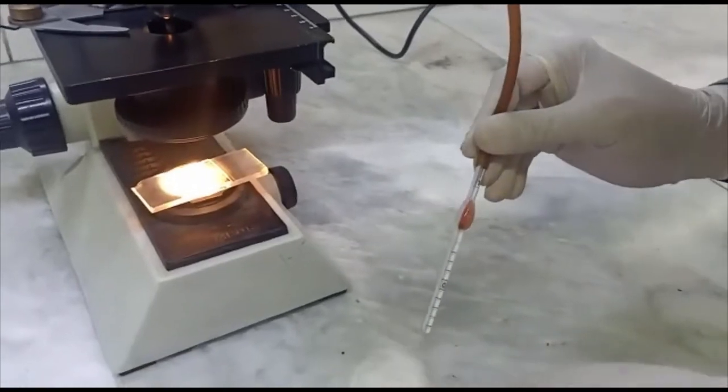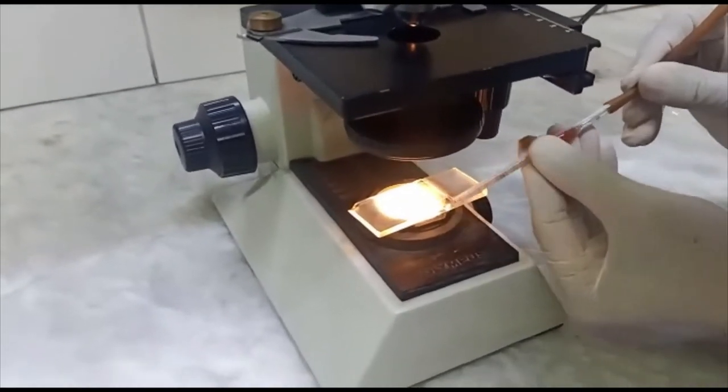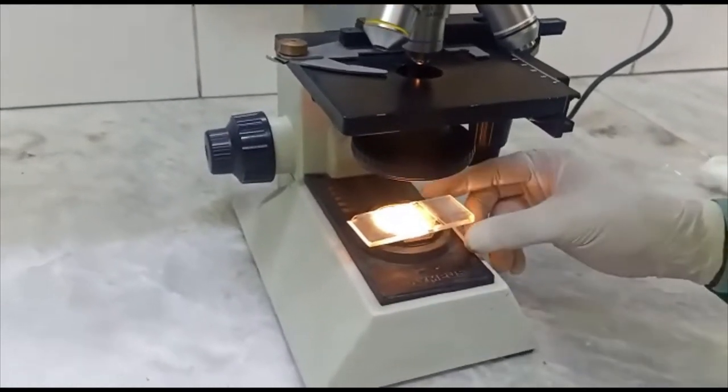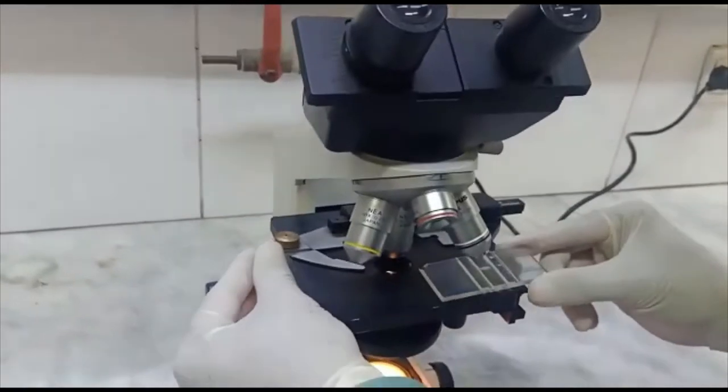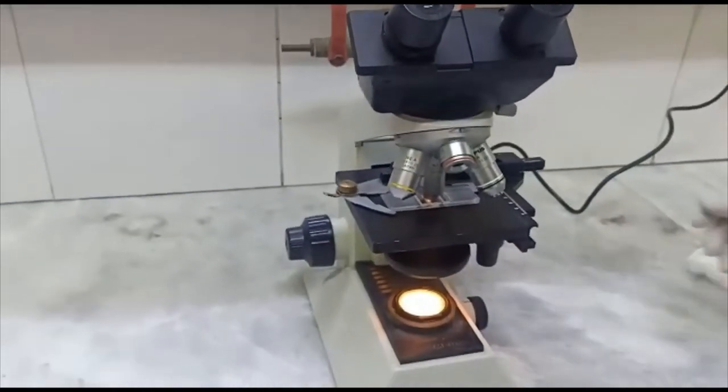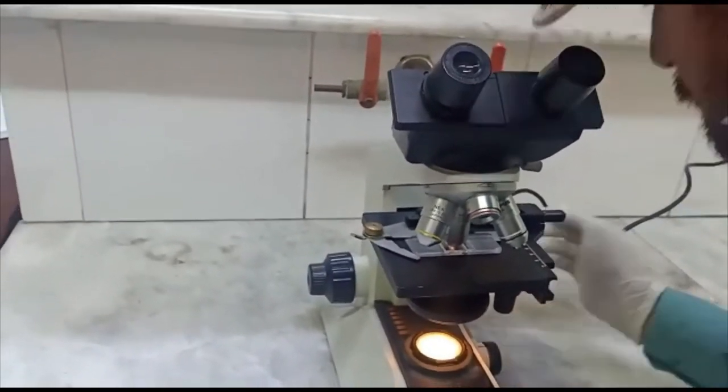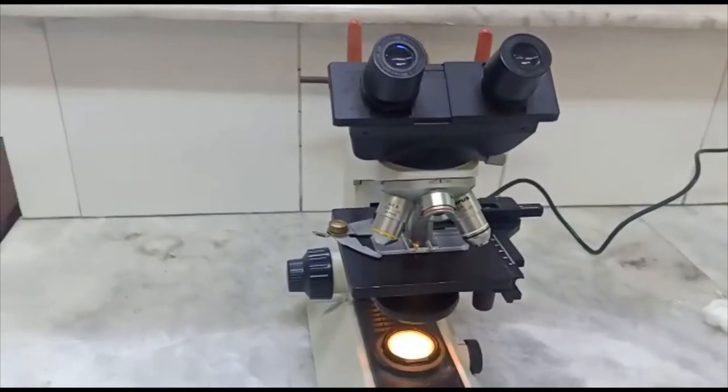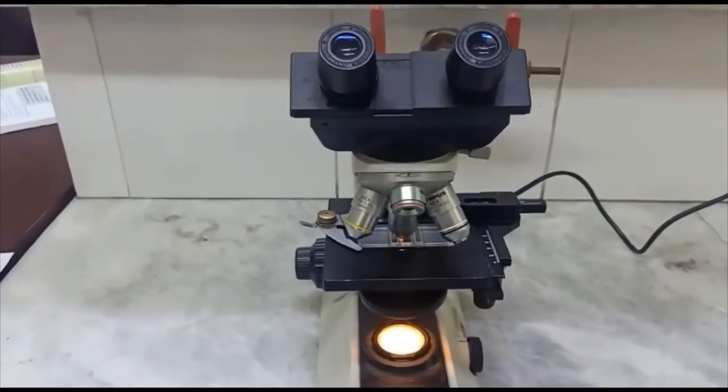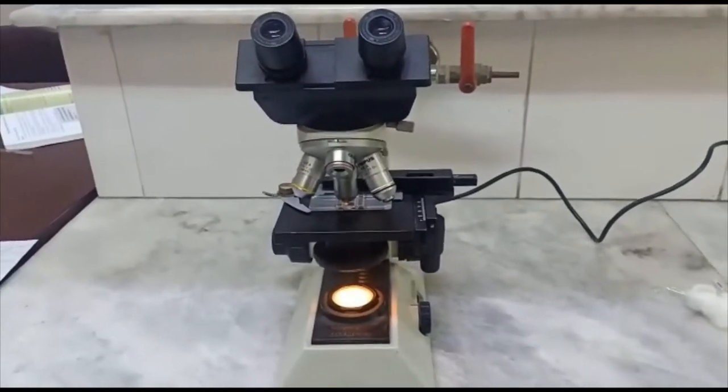Now we will charge the Neubauer chamber. This procedure is called charging. What do you mean by charging? When we put the RBC pipette at the edge of the cover slip, the blood goes under the cover slip and over the Neubauer chamber. We put the RBC pipette at an angle of 45 degrees, and after that we examine it under microscope, first under power 10x and then under power 40x.